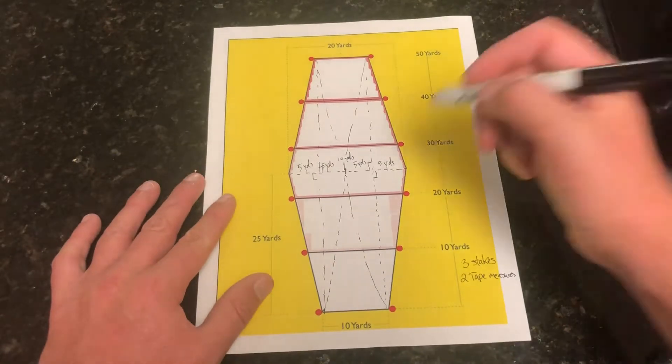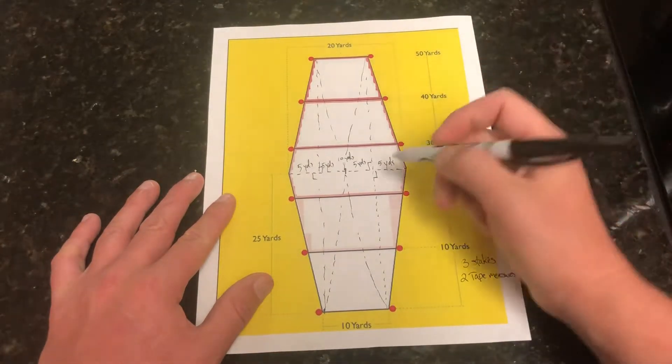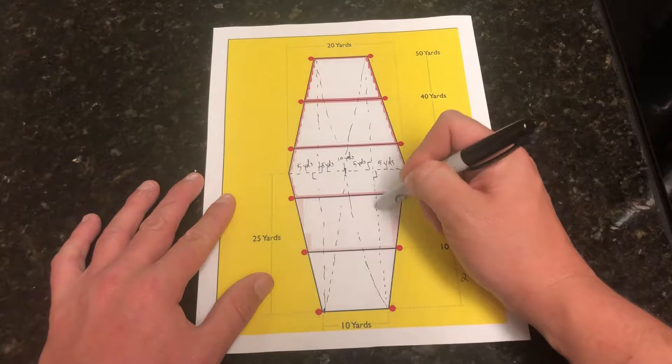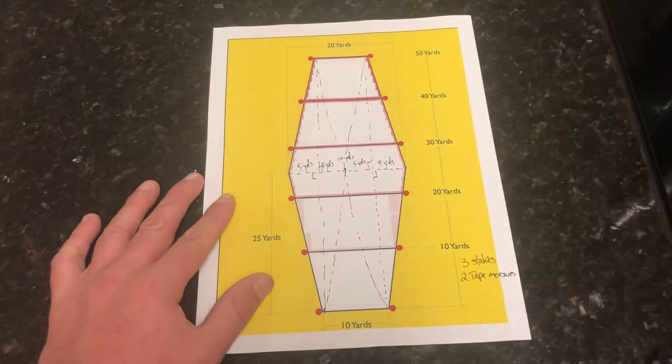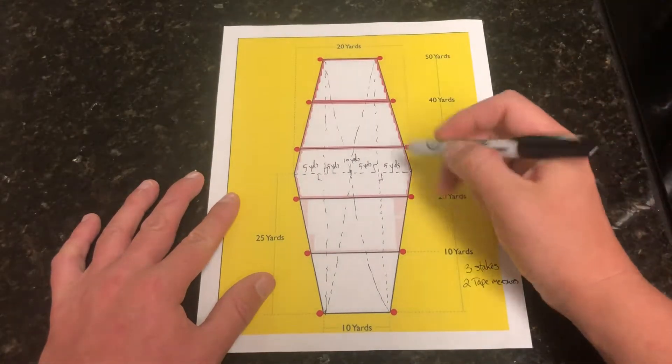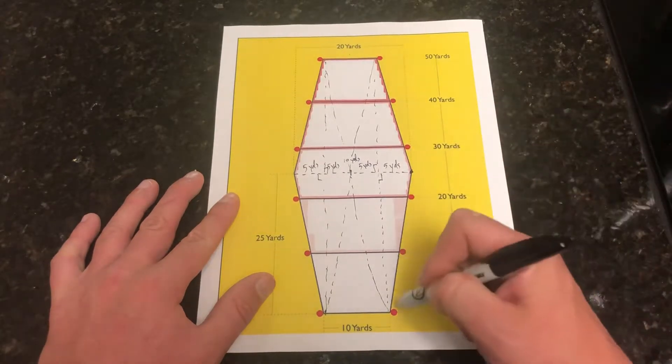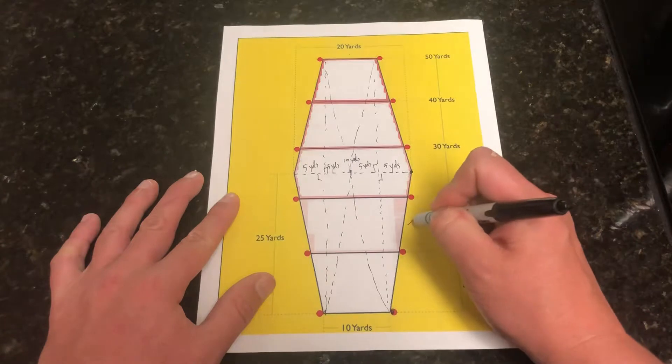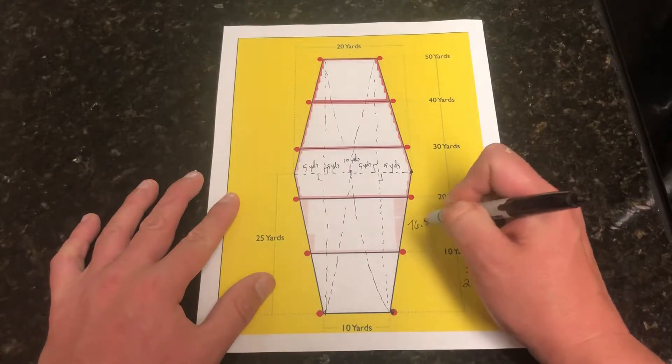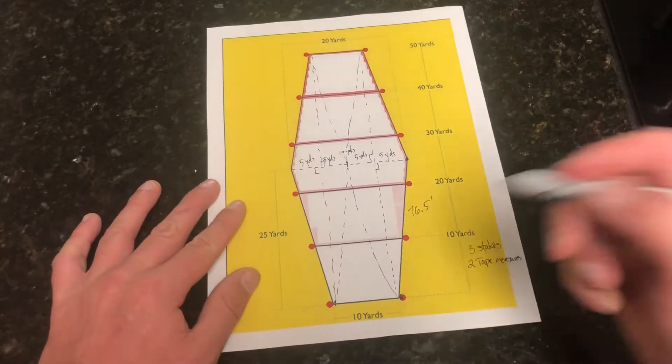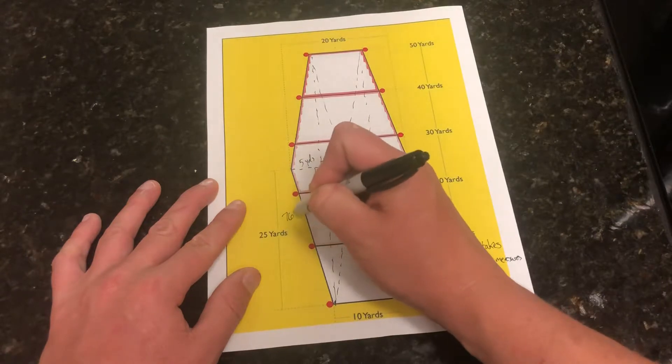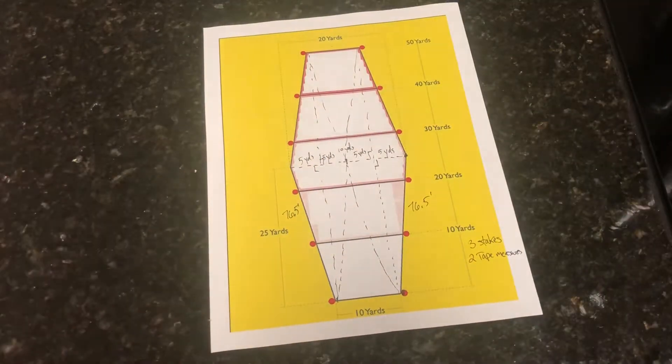If you can kind of follow what's going on, you will see that we have basically developed an additional set of right angles or right triangles. Pythagorean theorem, lovely little math formula. We're able to do some math here. We know that this piece here is 25 yards, this is 5.